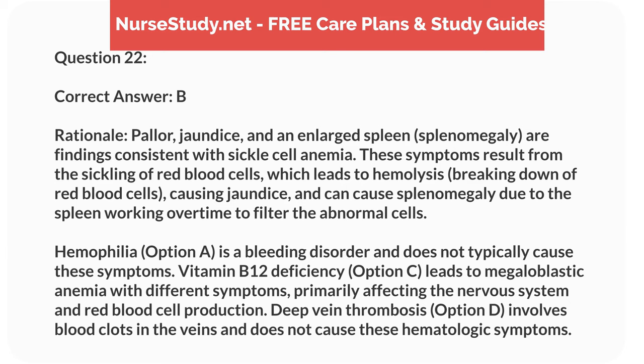Correct answer: B. Rationale: pallor, jaundice, and an enlarged spleen, splenomegaly, are findings consistent with sickle cell anemia. These symptoms result from the sickling of red blood cells, which leads to hemolysis, breaking down of red blood cells, causing jaundice, and can cause splenomegaly due to the spleen working overtime to filter the abnormal cells. Hemophilia, option A, is a bleeding disorder and does not typically cause these symptoms. Vitamin B12 deficiency, option C, leads to megaloblastic anemia with different symptoms, primarily affecting the nervous system and red blood cell production. Deep vein thrombosis, option D, involves blood clots in the veins and does not cause these hematologic symptoms.